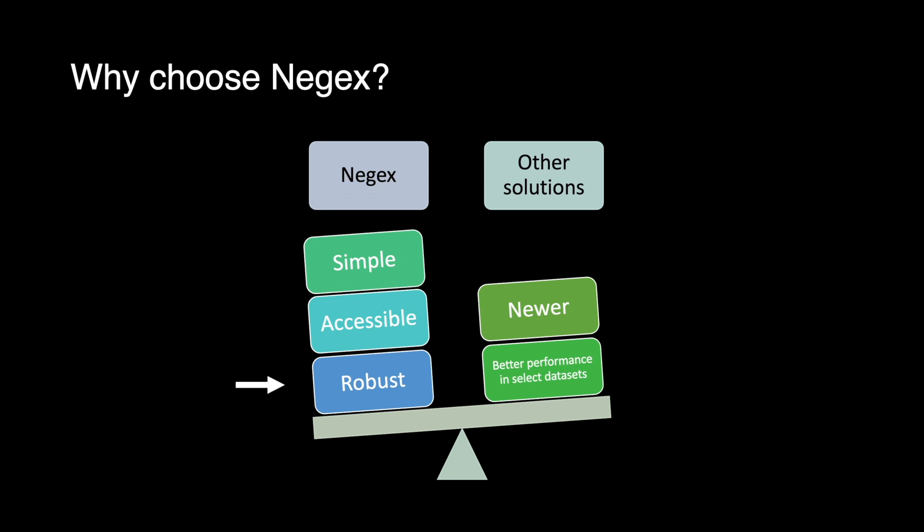And most importantly, it is robust. The results are fairly accurate. Depending on the data sets, usually the accuracy is above 70%. Although there are other solutions out there that are newer, in general, they don't have all of these advantages. Sometimes they achieve better performance in select data sets, but then they perform worse compared to NegX in other data sets.